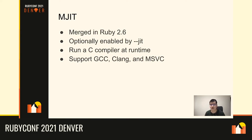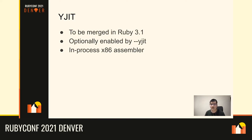Because MJIT is implemented using a C compiler, it can support GCC, Clang, and Microsoft Visual C++. So as long as you use one of these C compilers, it works well — it's a multi-platform implementation.